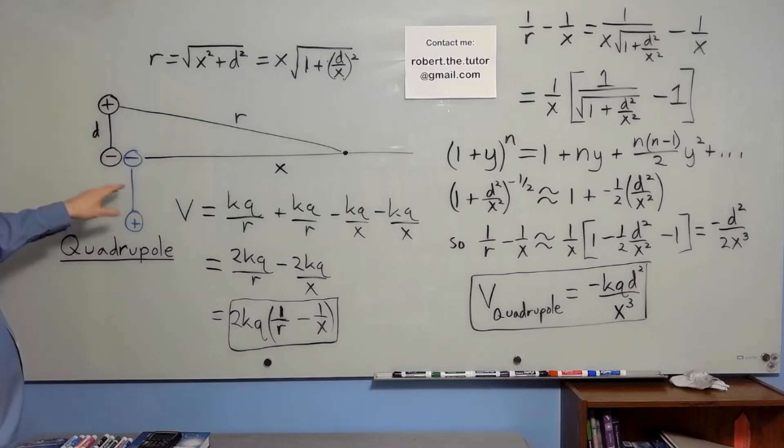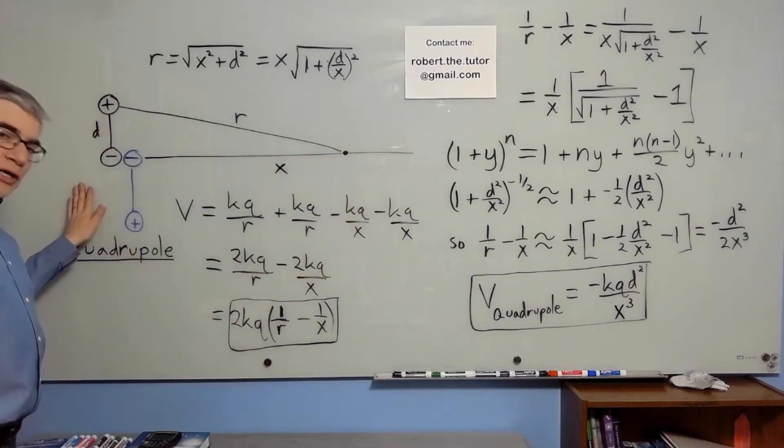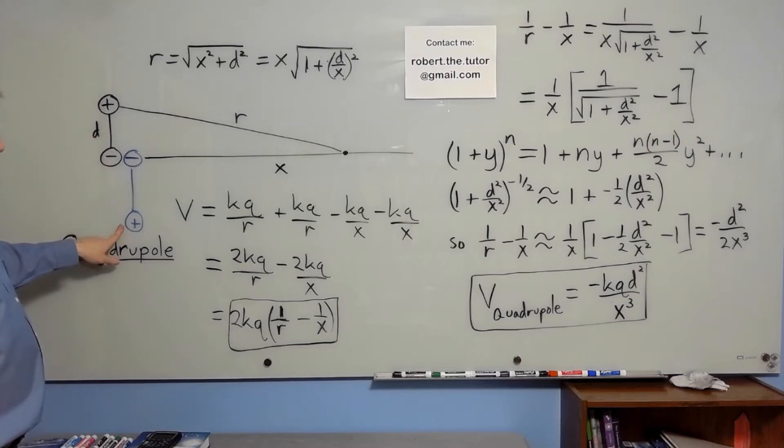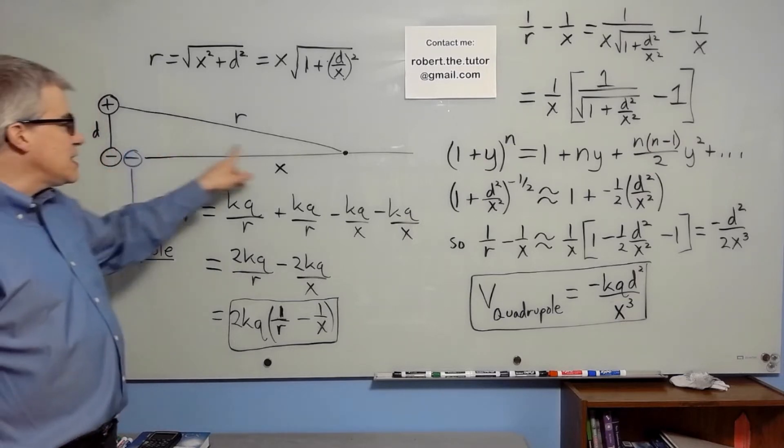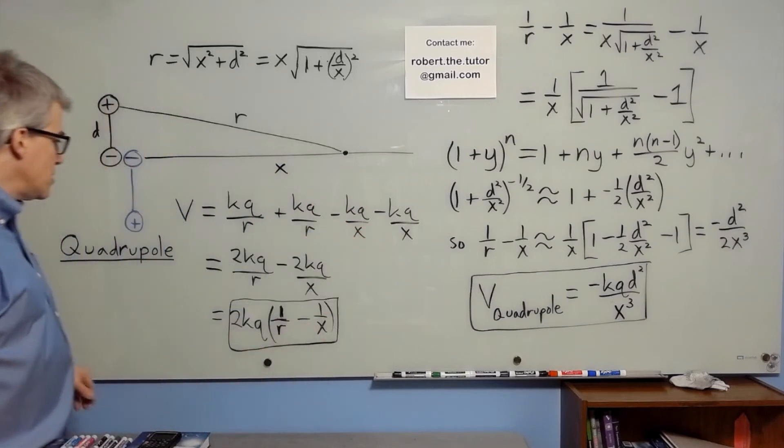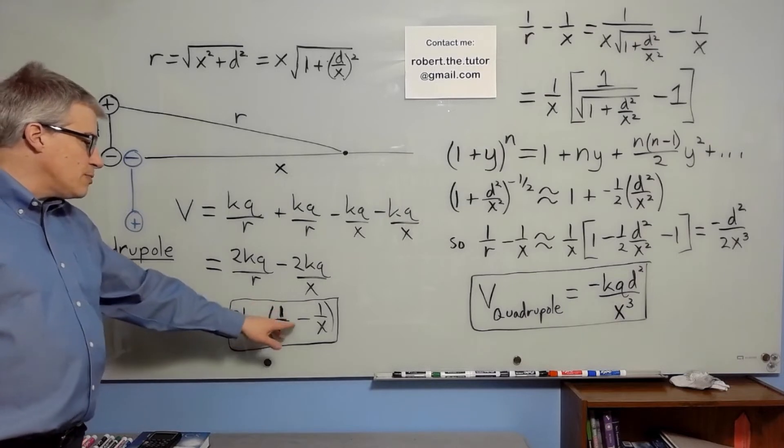I want to find the voltage along the axis. Now the voltage of four charges is easy enough. You just add up kq over r. We've got positive kq over r and positive kq over r, and we've got minus kq over x and minus kq over x. So that gives us 2kq times 1 over r minus 1 over x.